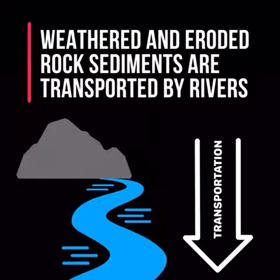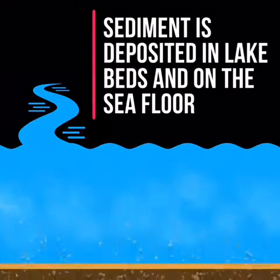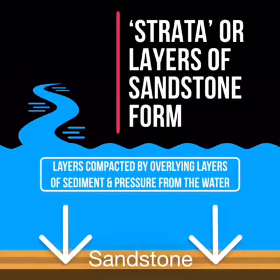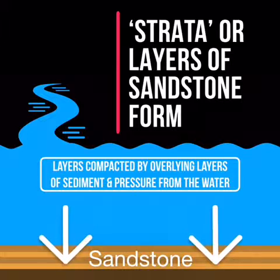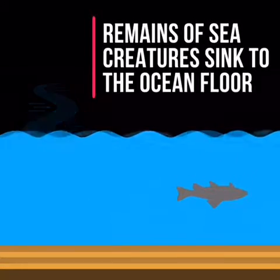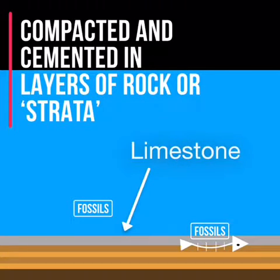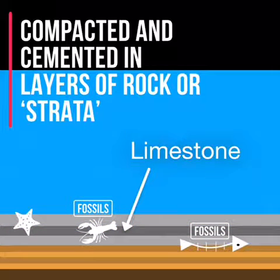Weathered and eroded rock sediments can then be transported by rivers. The sediment is then deposited in lake beds and on the sea floor. As the layers of sediment are compacted and compressed, they form strata or layers to form sandstone. The remains of sea creatures sink to the ocean floor and are compacted and cemented in layers of rock or strata to form limestone.